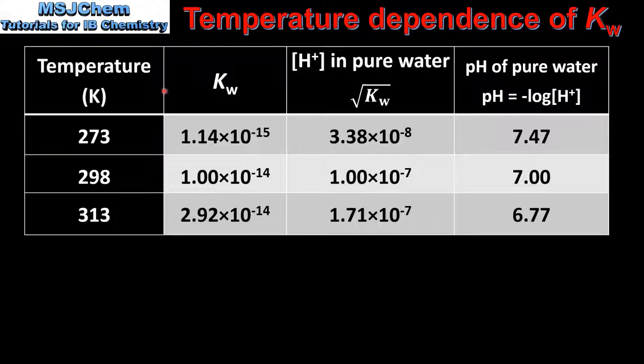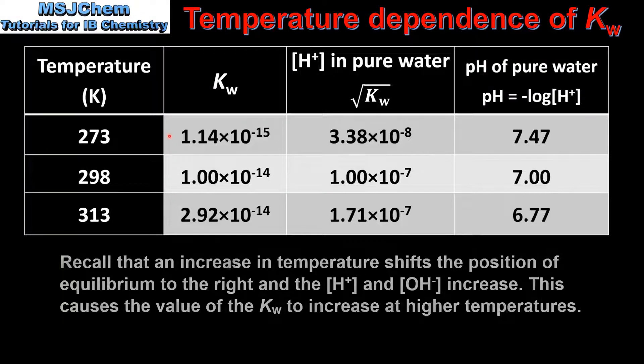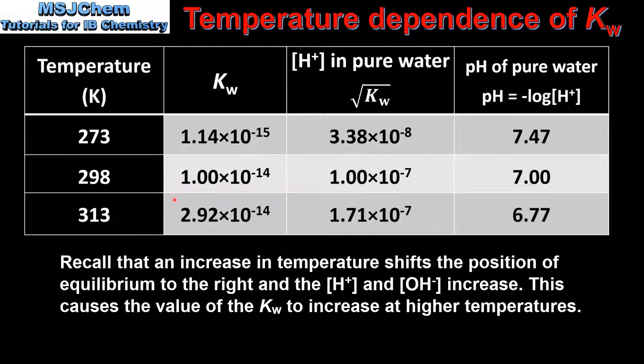In this table we have the value of the Kw at three different temperatures. We can see that as the temperature increases so does the value of the Kw. To find the concentration of hydrogen ions in pure water we take the square root of the Kw.